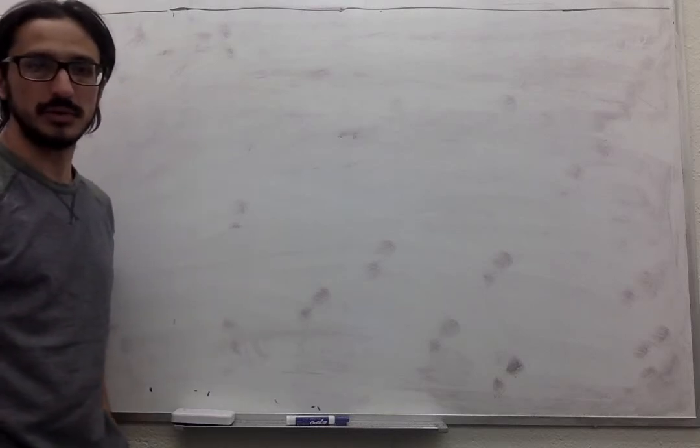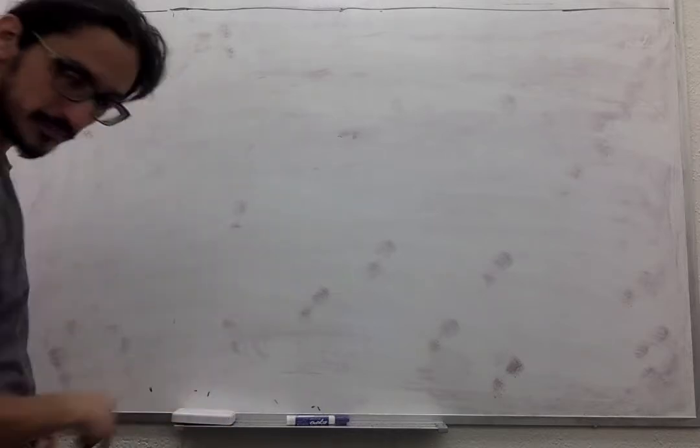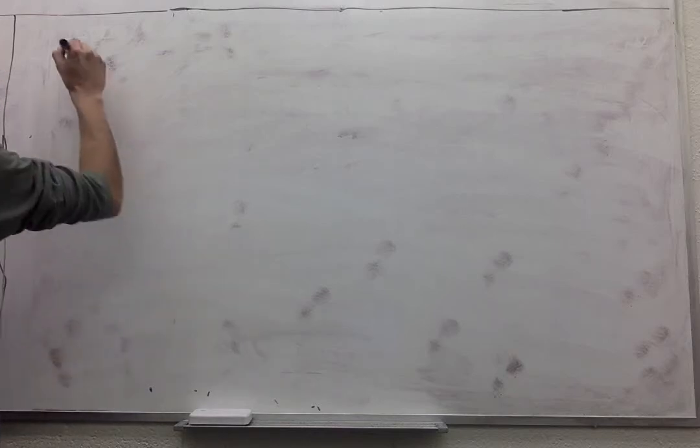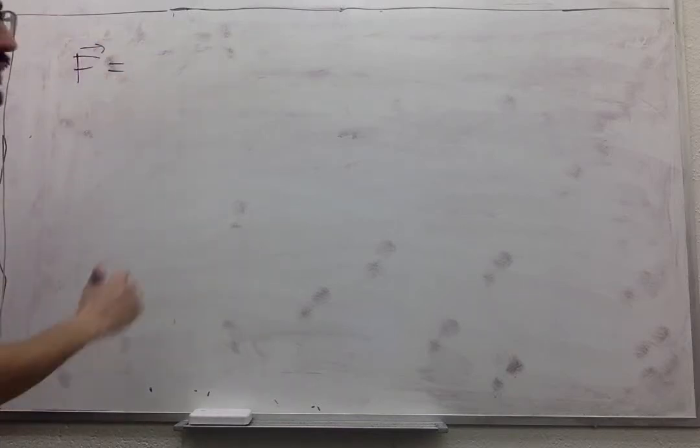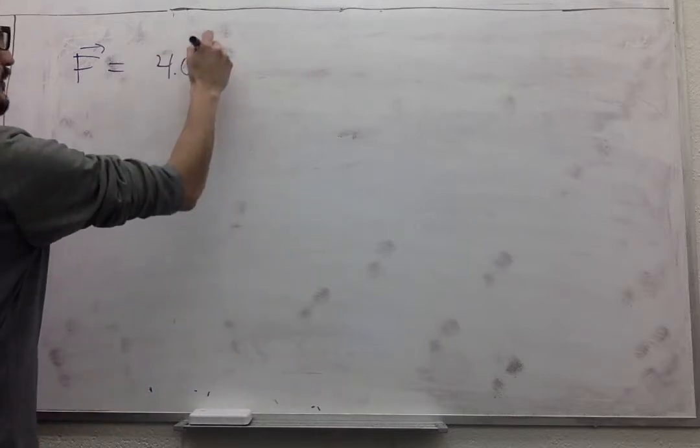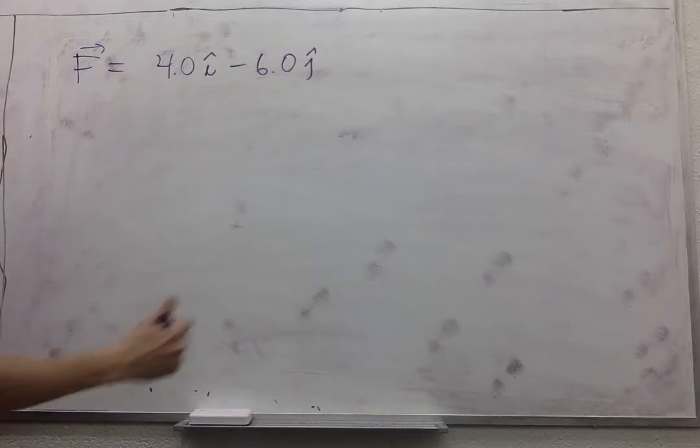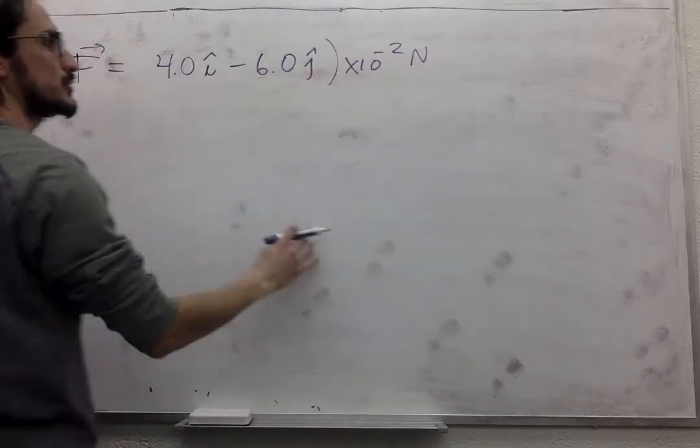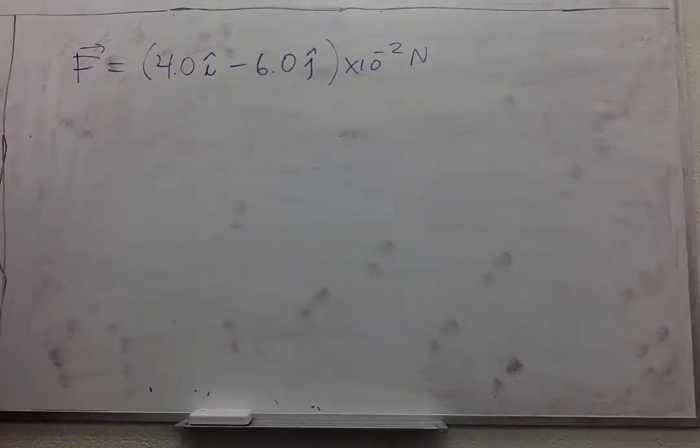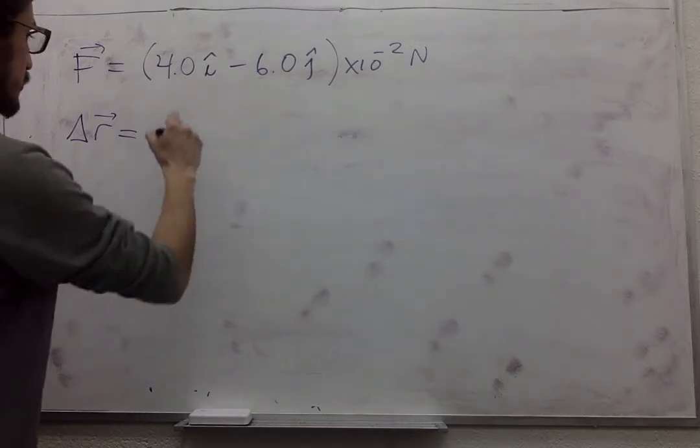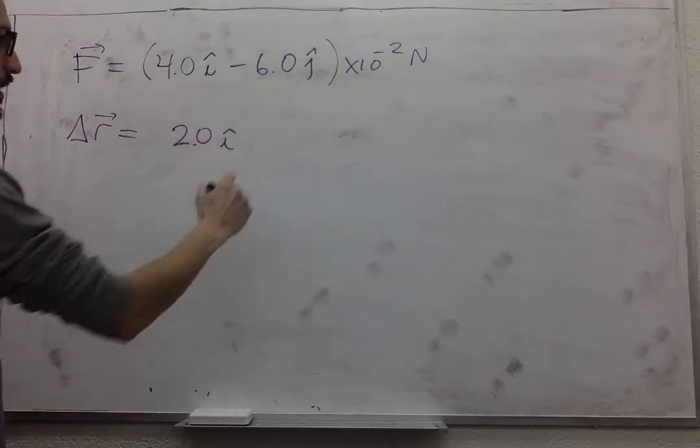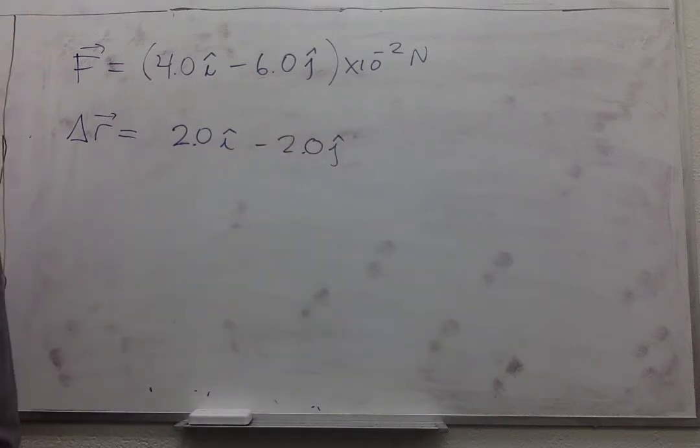So this is a problem about a bug that is hovering in the air and there is a gust of wind that exerts a force 4.0 in the I direction minus 6.0 in the J direction times 10 to the negative 2 newtons. It asks us how much work is done by the wind as the bug undergoes the displacement delta R 2.0 in the I direction minus 2.0 in the J direction meters.